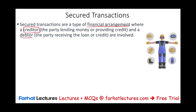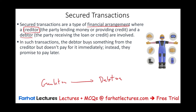We have two parties: a creditor, who could be a lender, a bank, or a seller, and a debtor — the person borrowing the money. In such a transaction, the debtor buys something from the creditor but does not pay for it immediately.